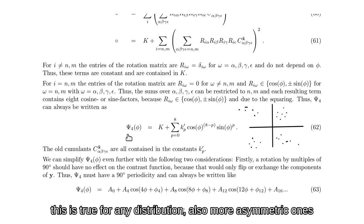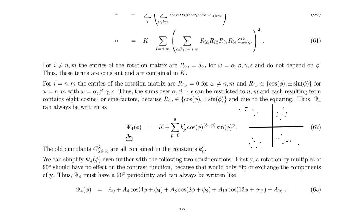So rotation by 90 degrees should not change psi, the contrast function. So the contrast function has a 90-degree periodicity. This means it can always be written in such a form, right?